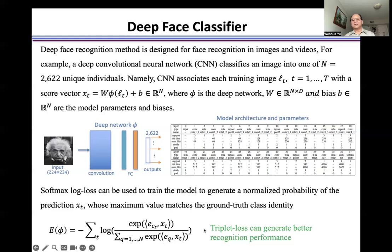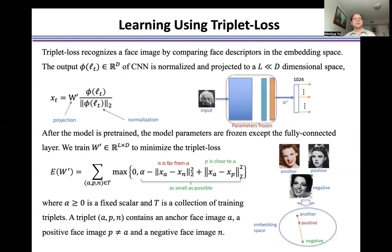Triplet loss can generate better recognition performance. Triplet loss recognizes a face image by comparing face descriptors in the embedding space. The output of CNN is normalized and projected to an L-dimensional space.